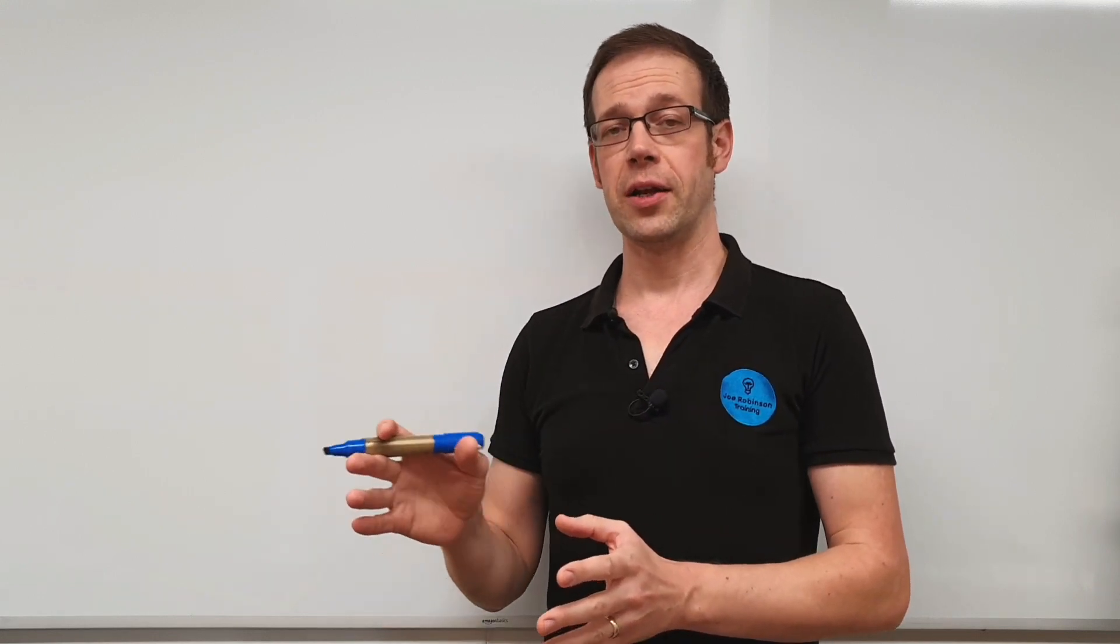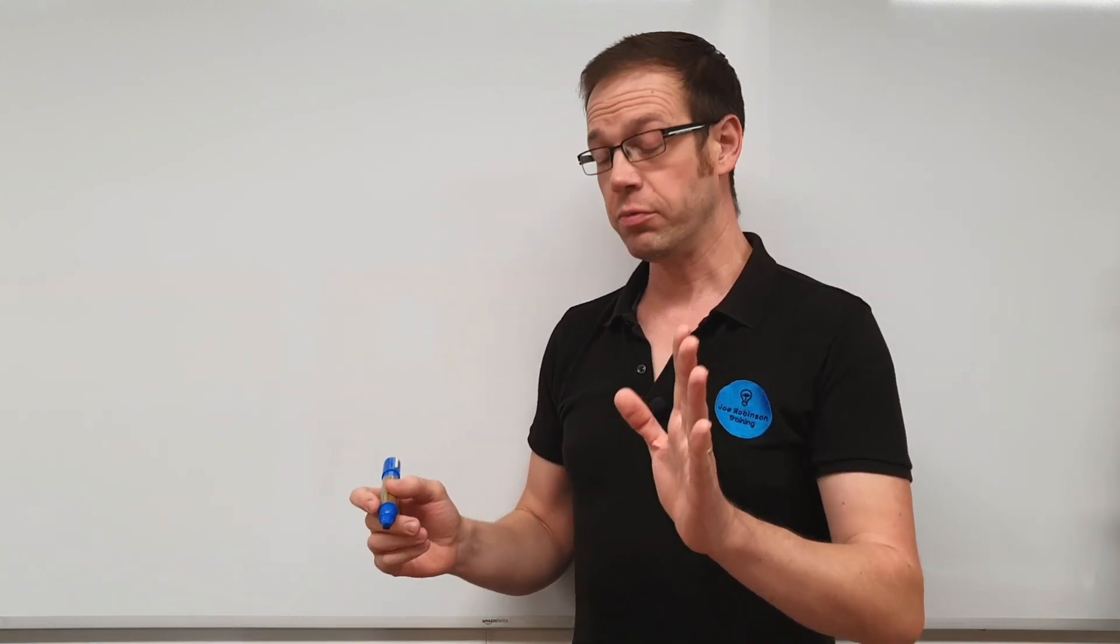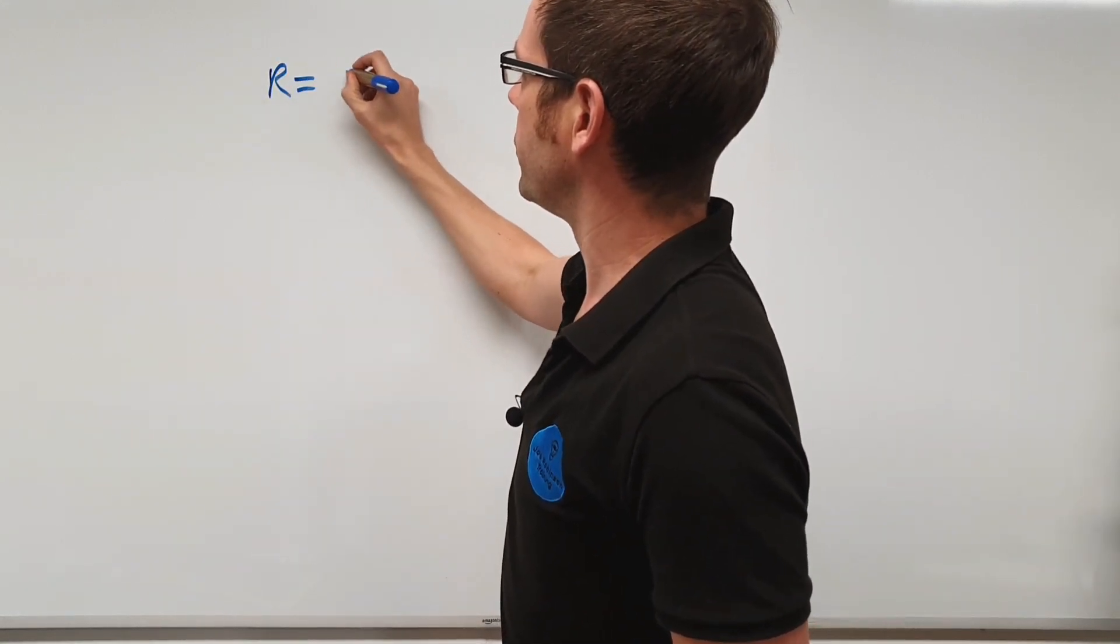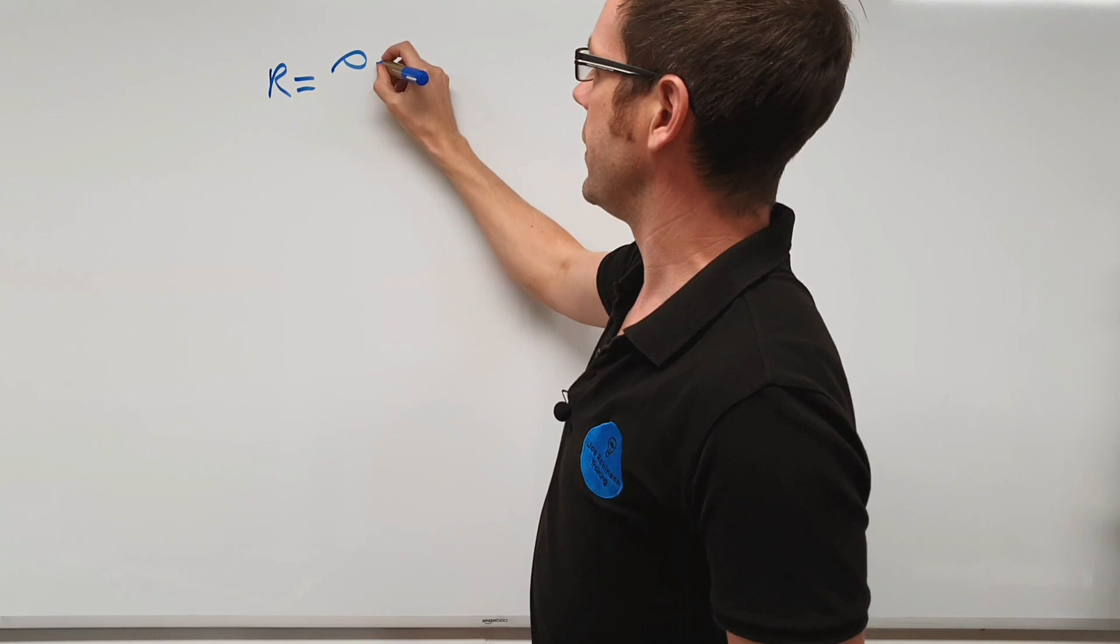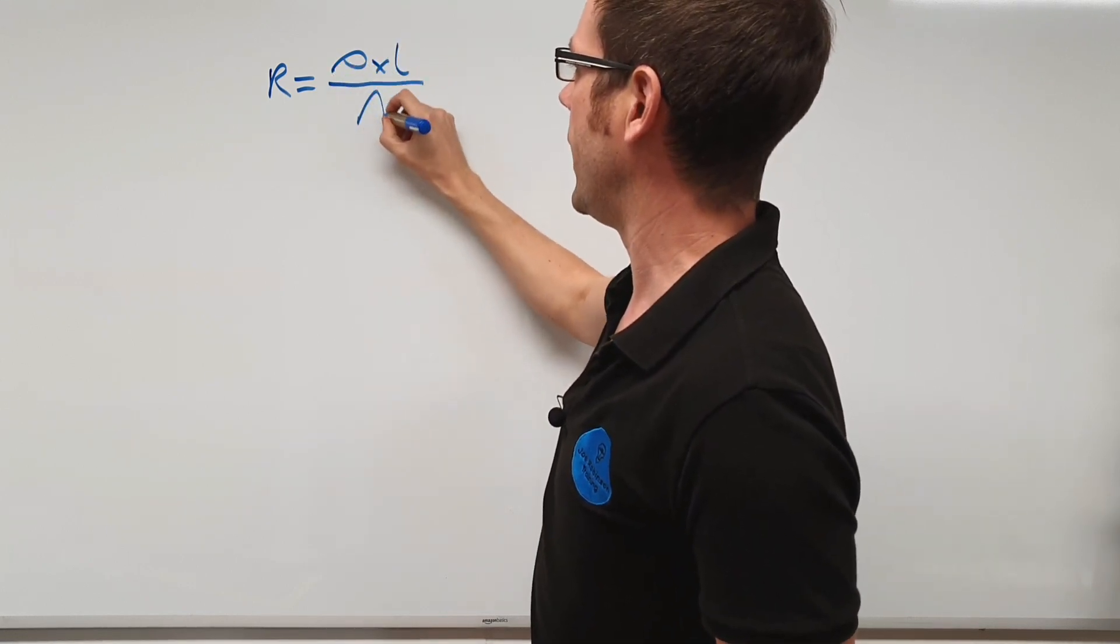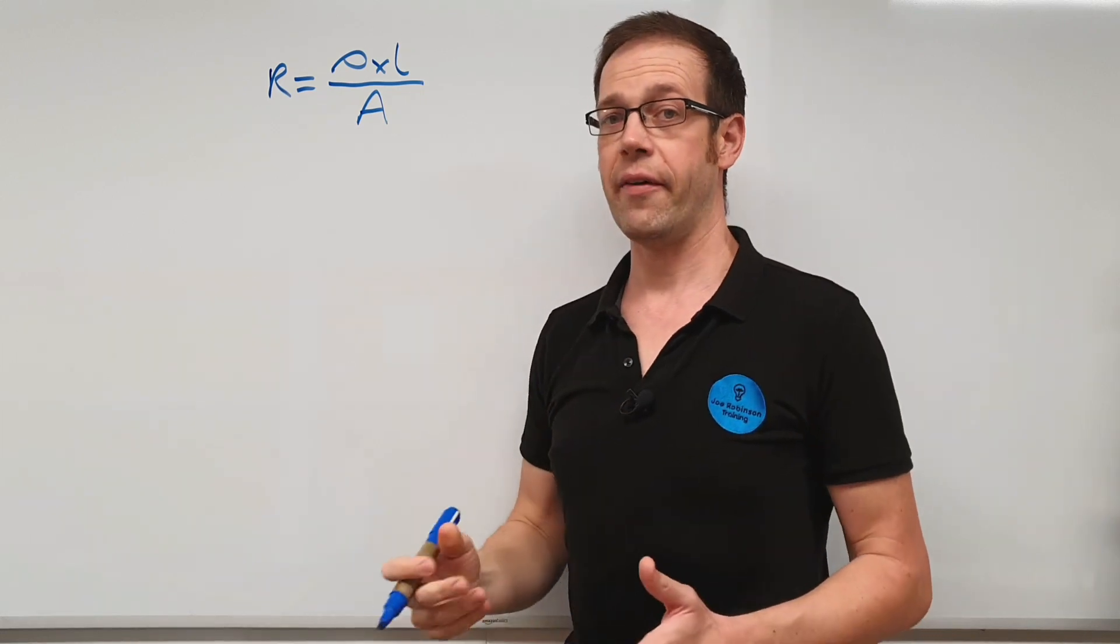Now there are other videos on my channel that go into the subject of resistivity and this formula in much more detail. But for now just trust me the formula looks like this. Its resistance is equal to rho, the resistivity, times by the length of the conductor divided by A, the cross-sectional area of the conductor.